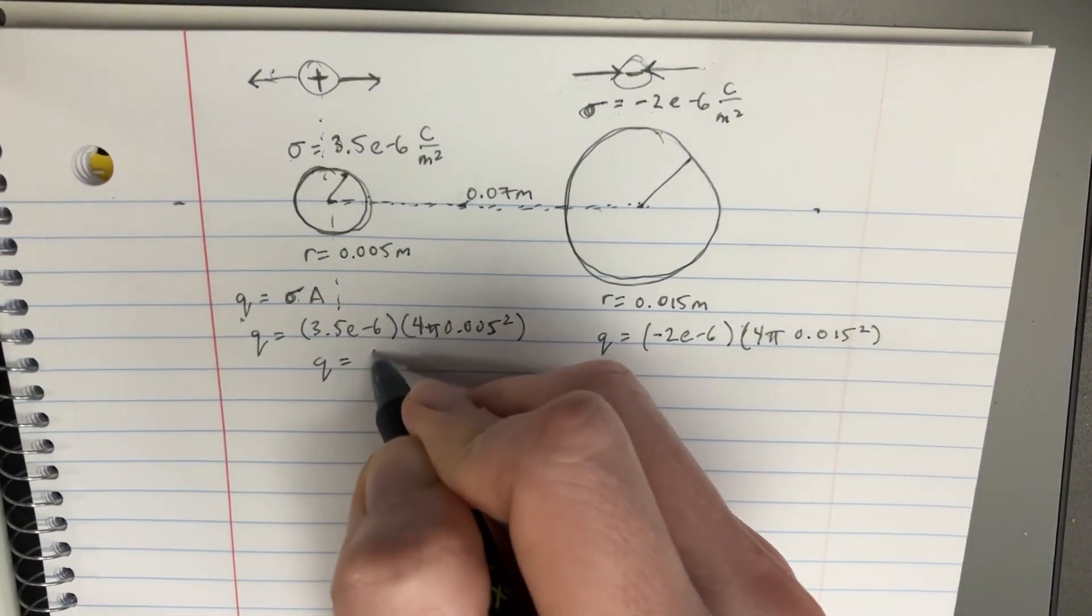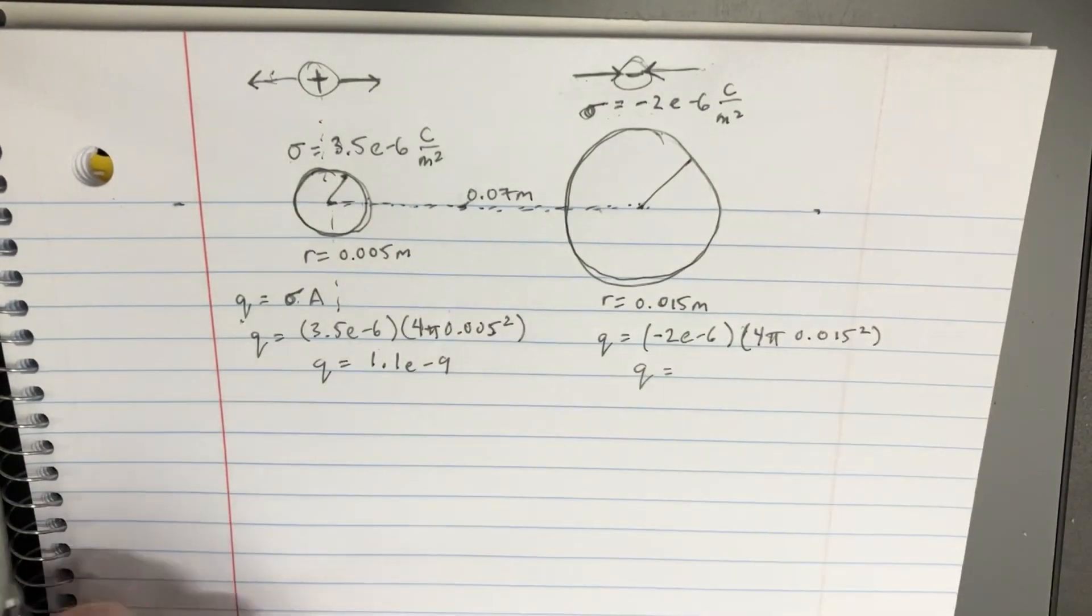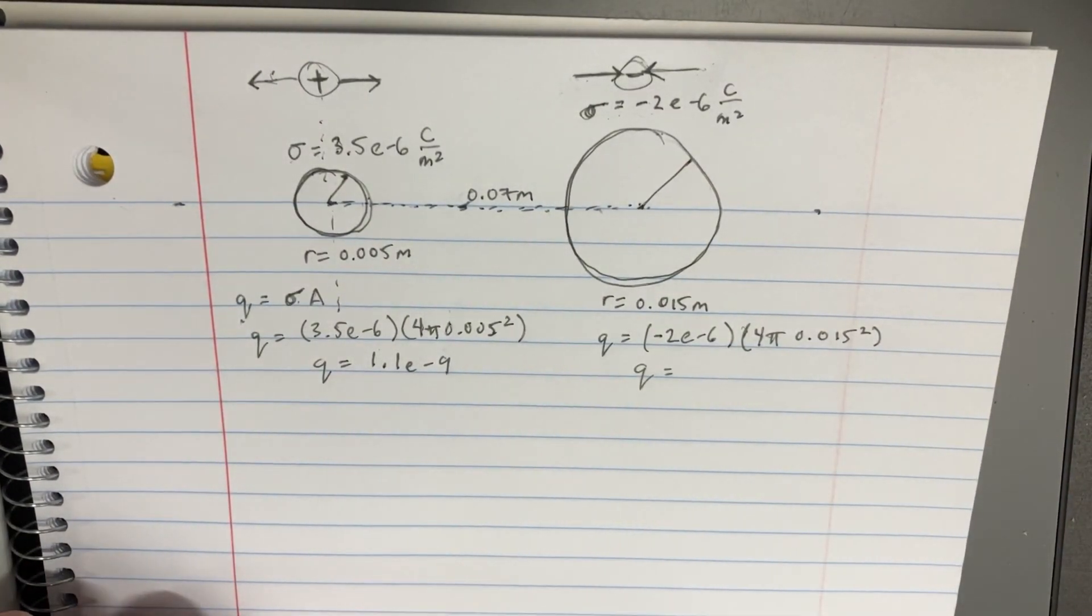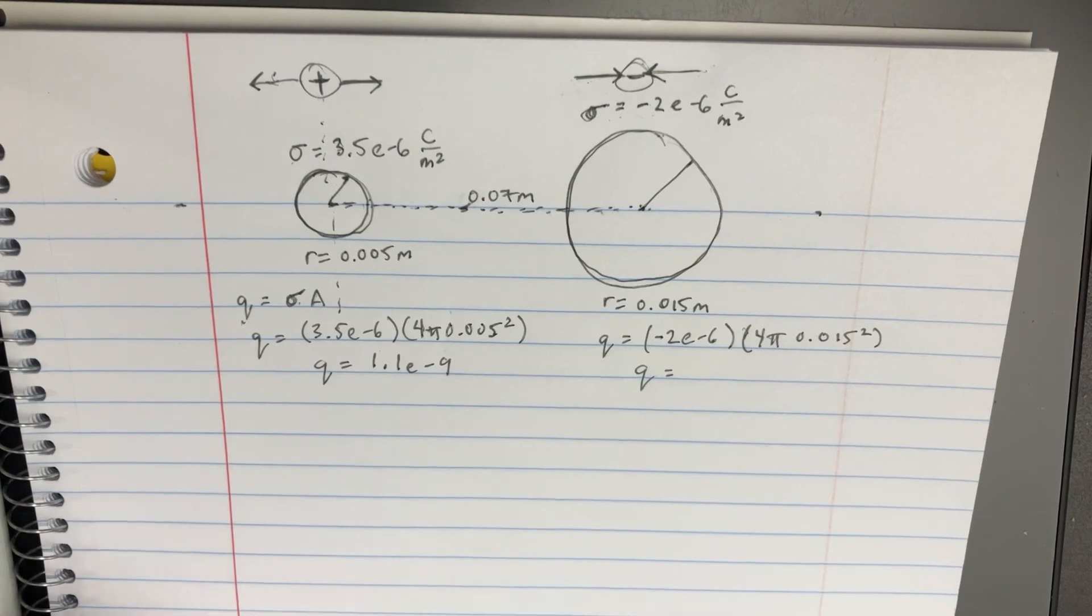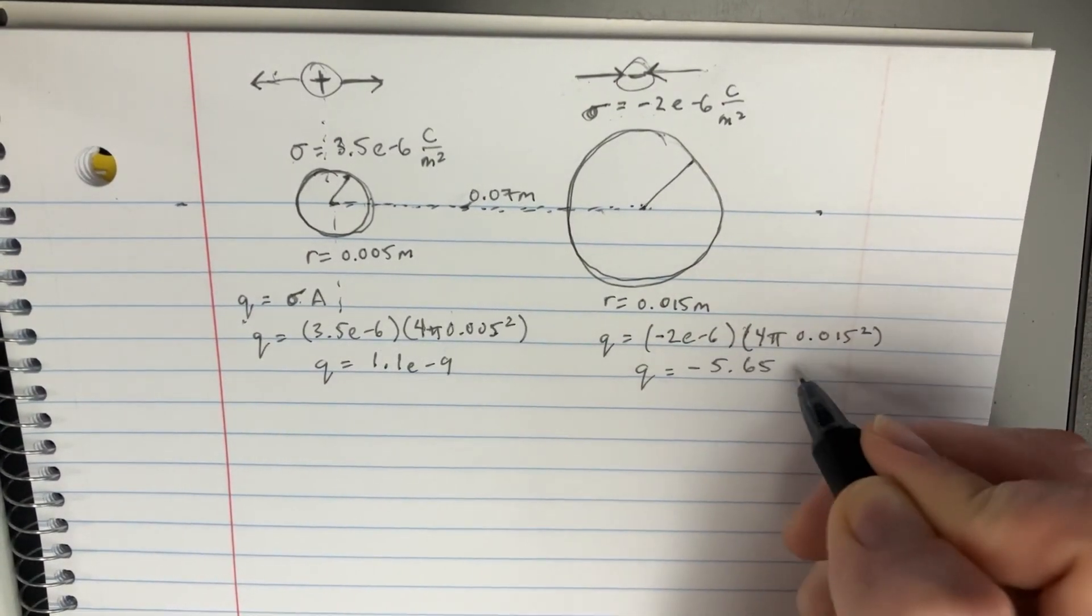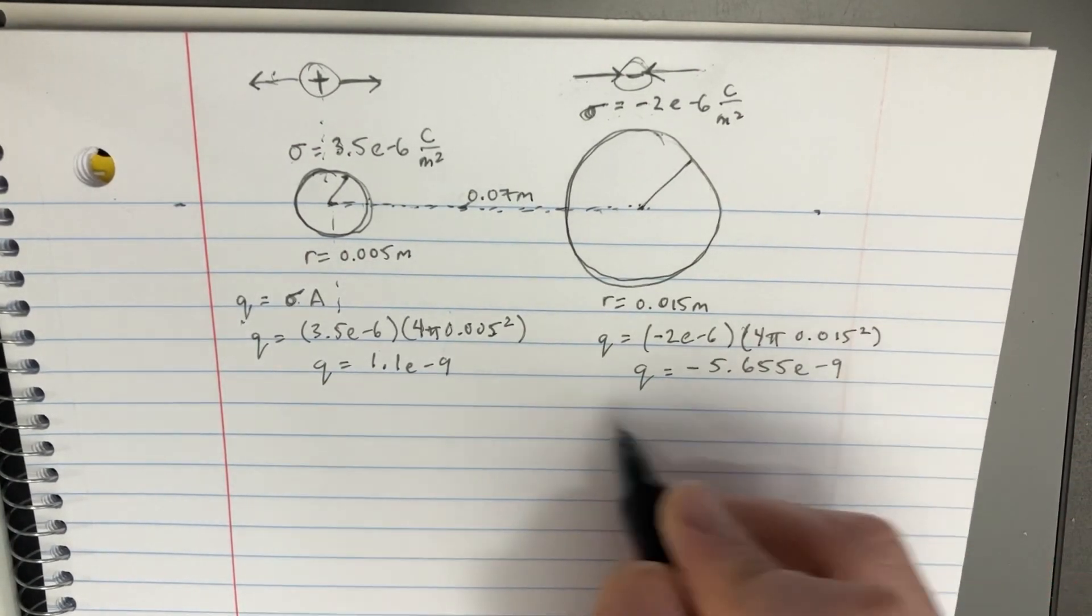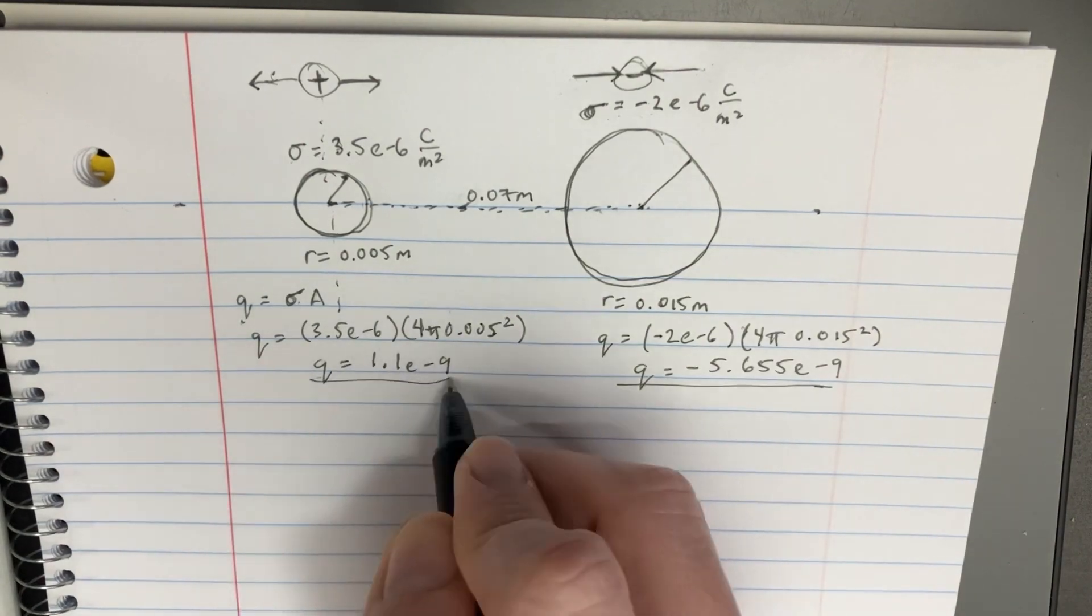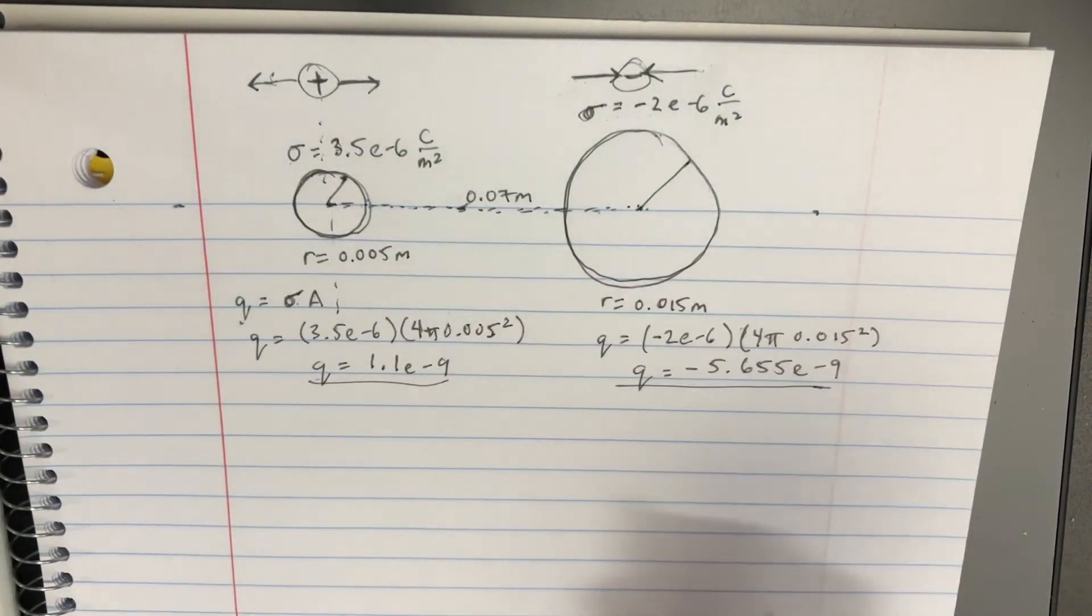So, on the left side, we'll get 3.5 e to negative 6 times 4 pi times 5, so on this side, we get a q of 1.1 e to negative 9. And then, on this side, we'll get a q of negative 5.655 e to negative 9. So, you can see how this is actually a very large negative charge, and that's kind of a small positive charge. That kind of changes our perspective a little bit.